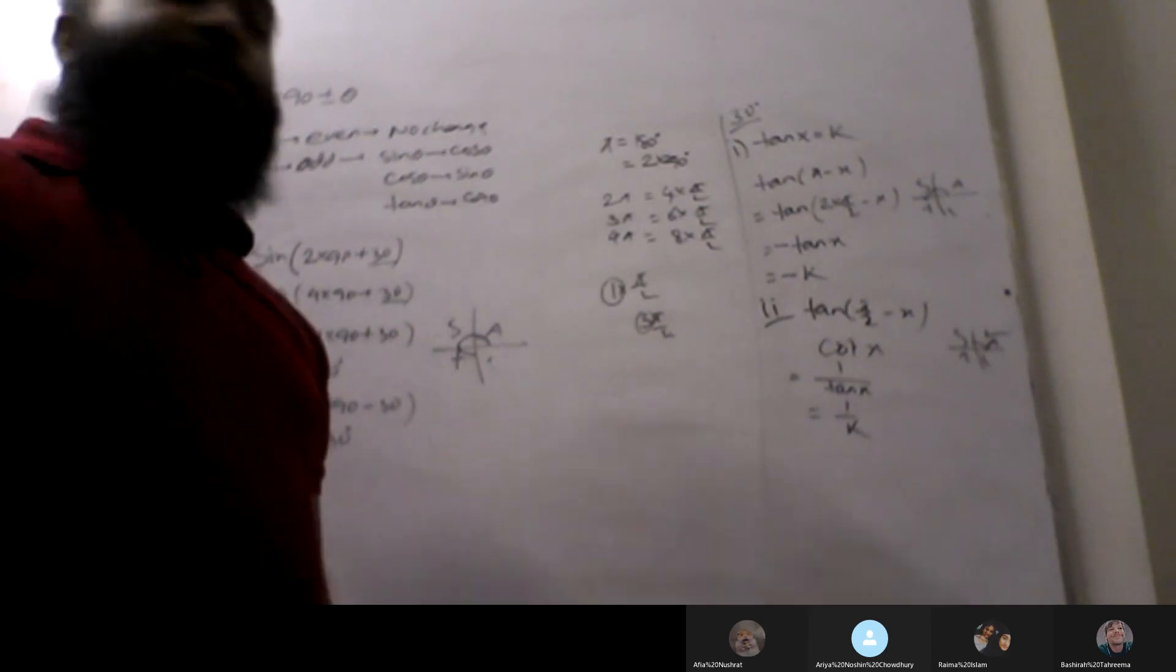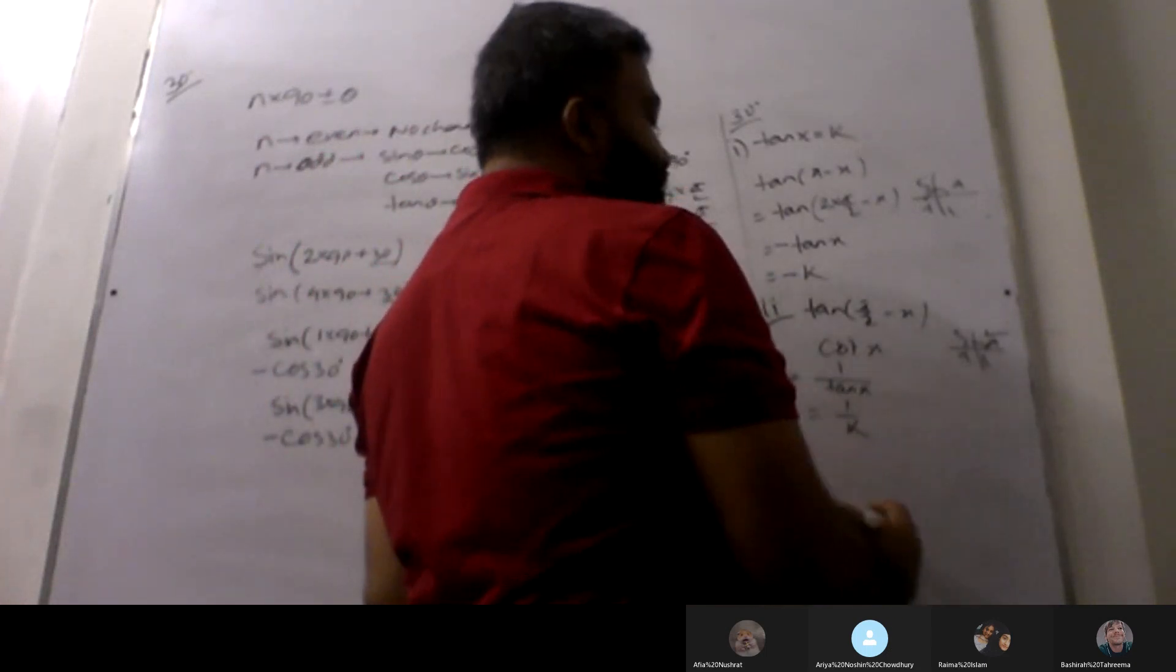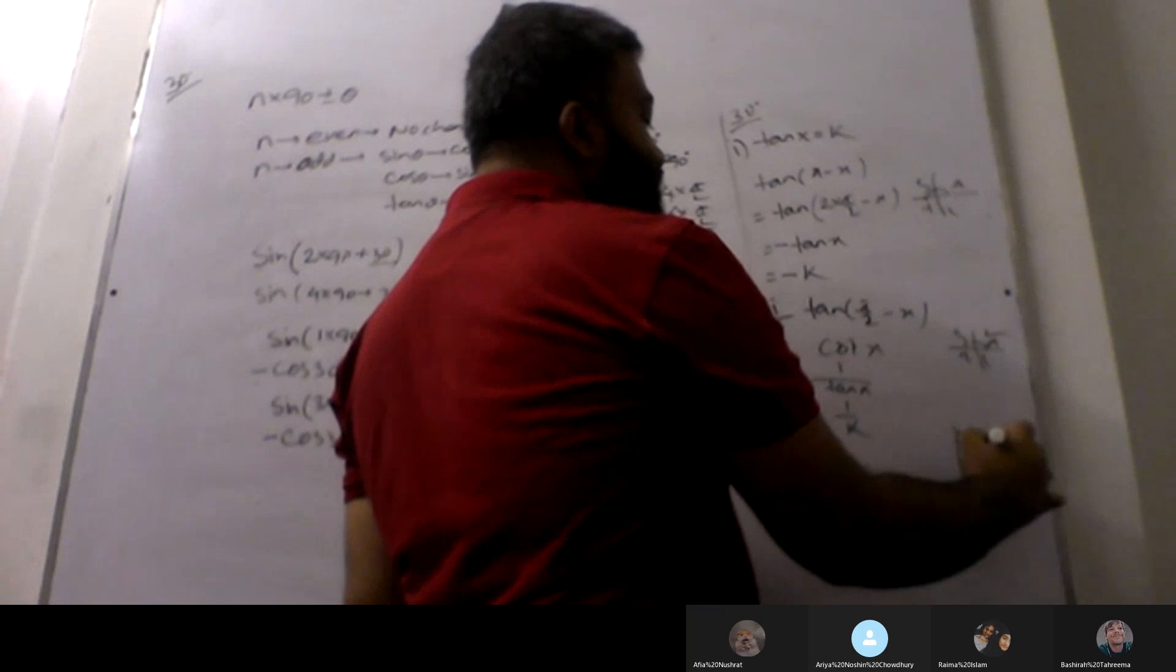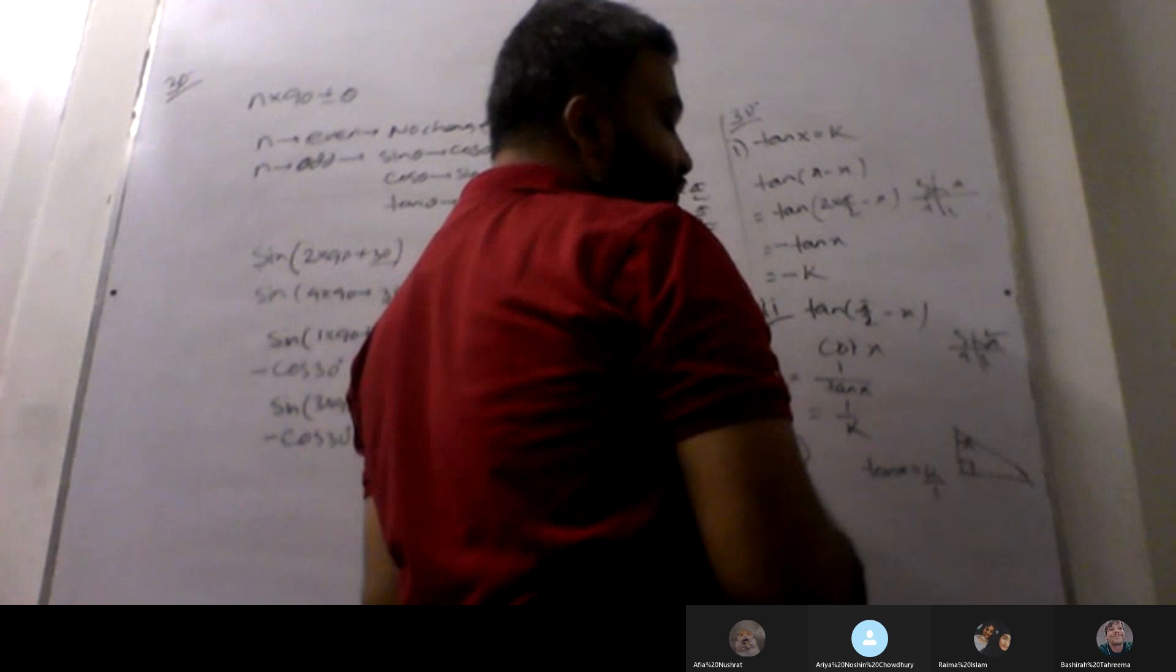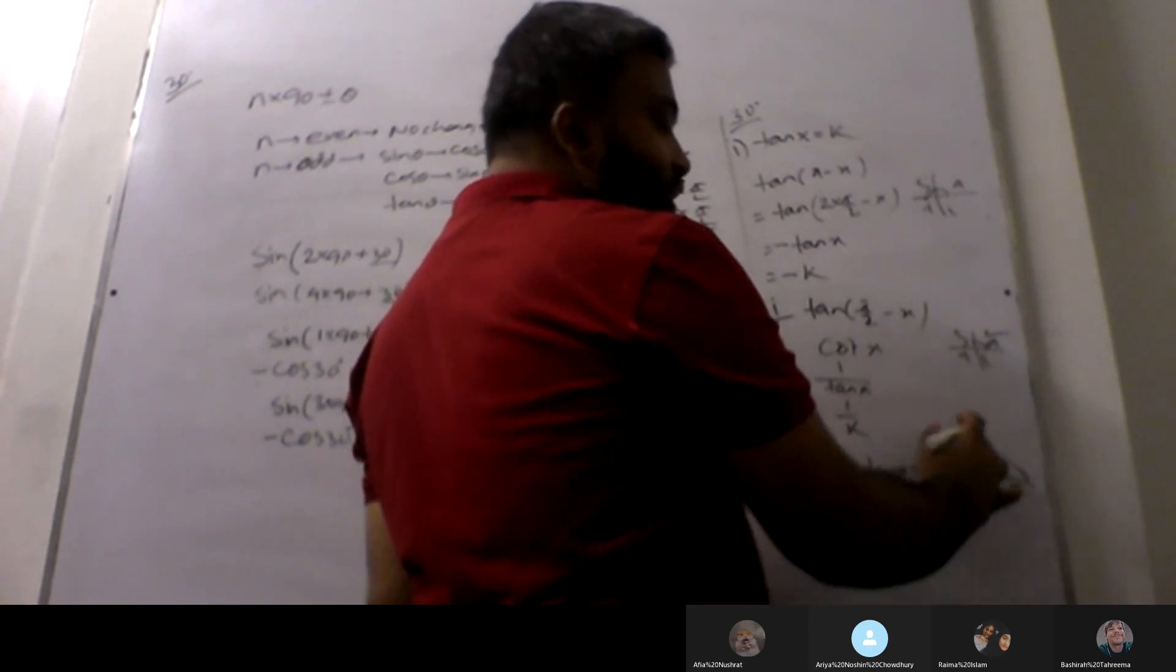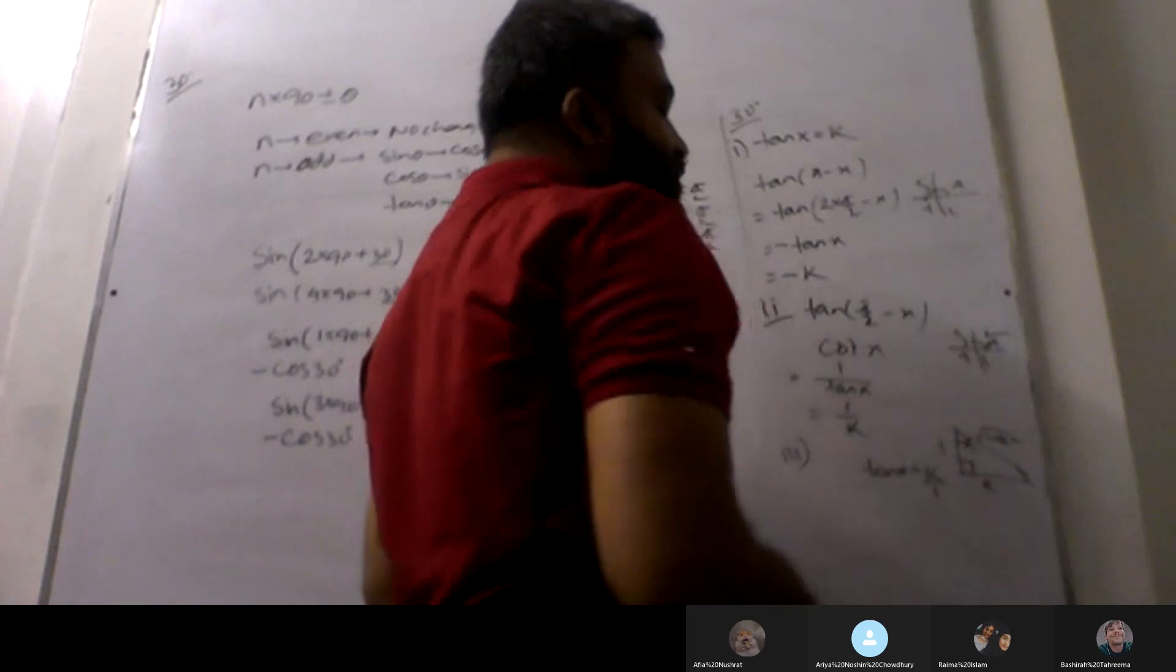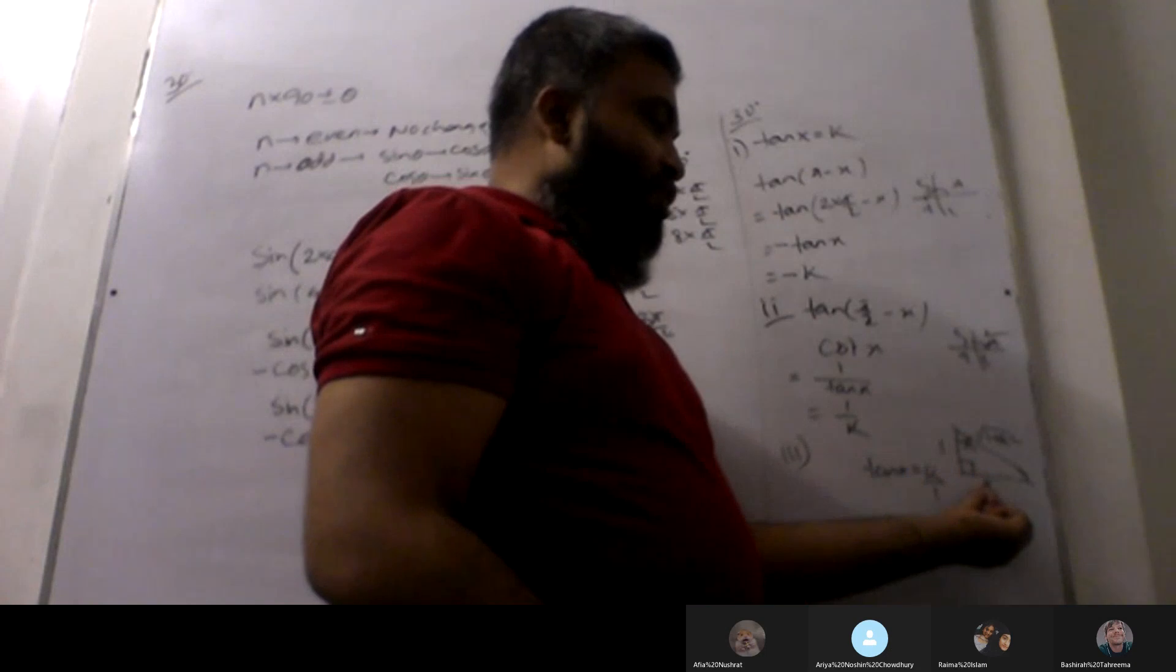Part 3 is only sine x. Part 3 is the value of sine x. Now, let's see. I will draw the right angle triangle. This is the value of x. And tan x equals to k. This is k by 1. So, it is the x. Then, opposite by adjacent. Opposite k. Adjacent is 1.